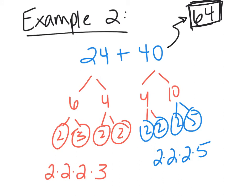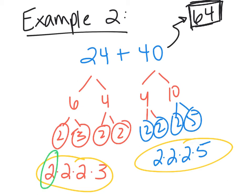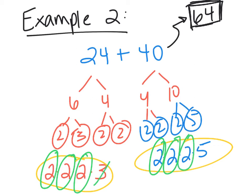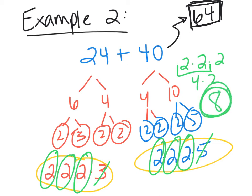My prime factorization of 24 is 2 times 2 times 3. My prime factorization of 40 is 2 times 2 times 5. Looking for common numbers: I see 1 set of 2s, 2 sets of 2s, 3 sets of 2s. The 3 doesn't match anything, and the 5 doesn't match anything. So I have 2 times 2 times 2. 2 times 2 is 4, and 4 times 2 is 8. The GCF between 24 and 40 is 8.